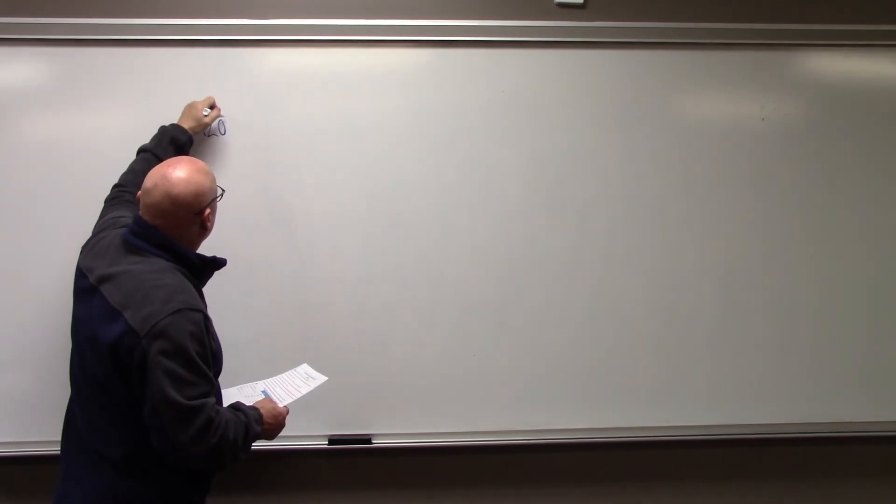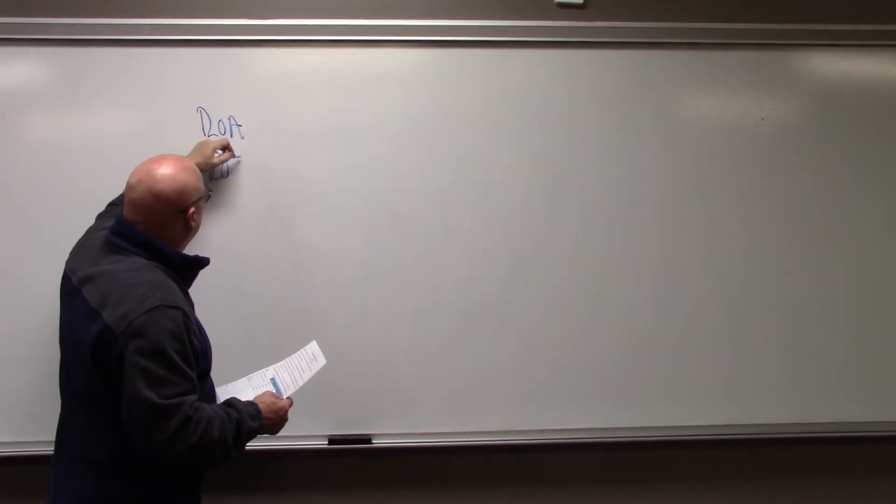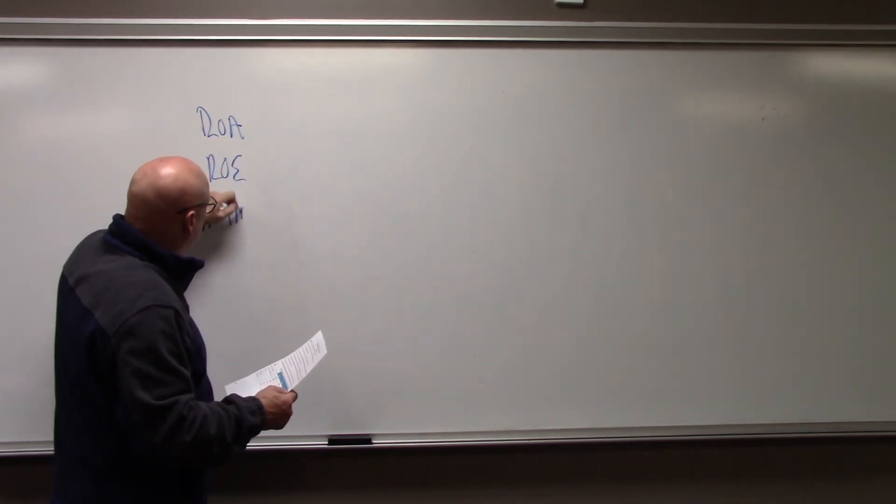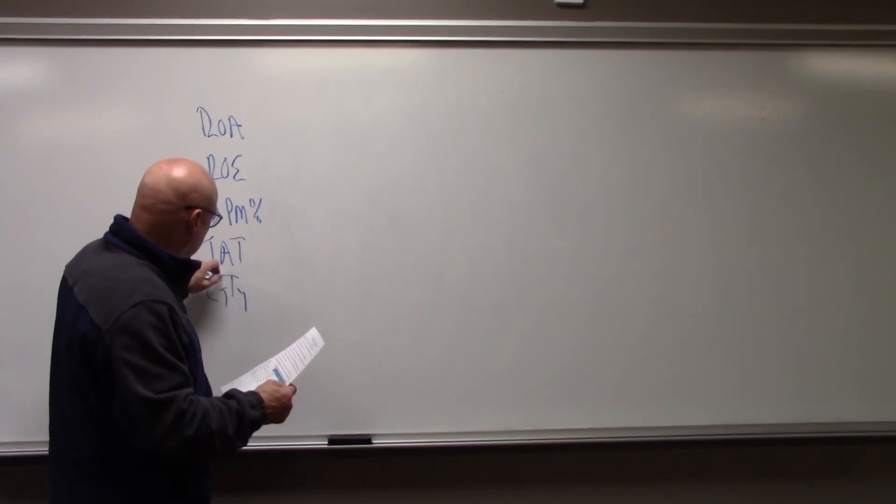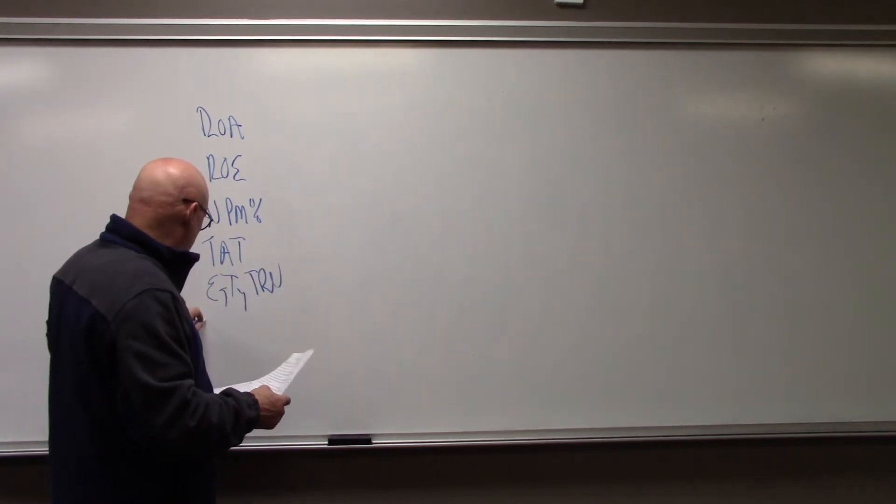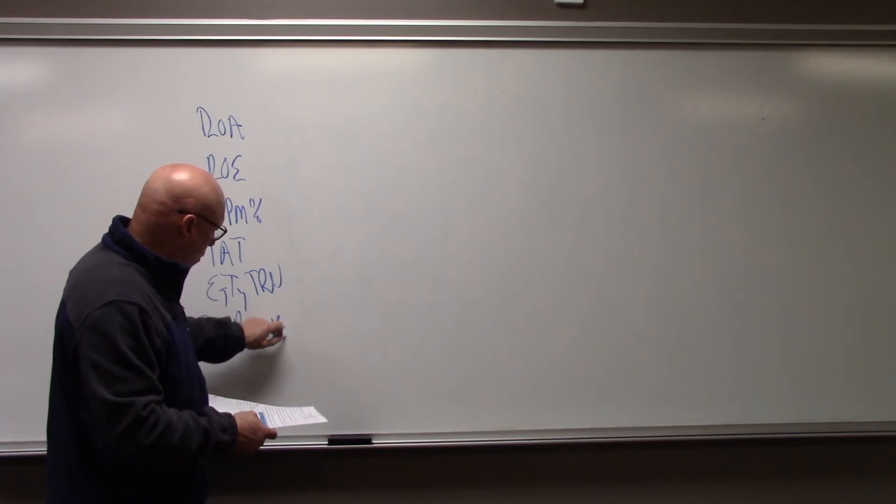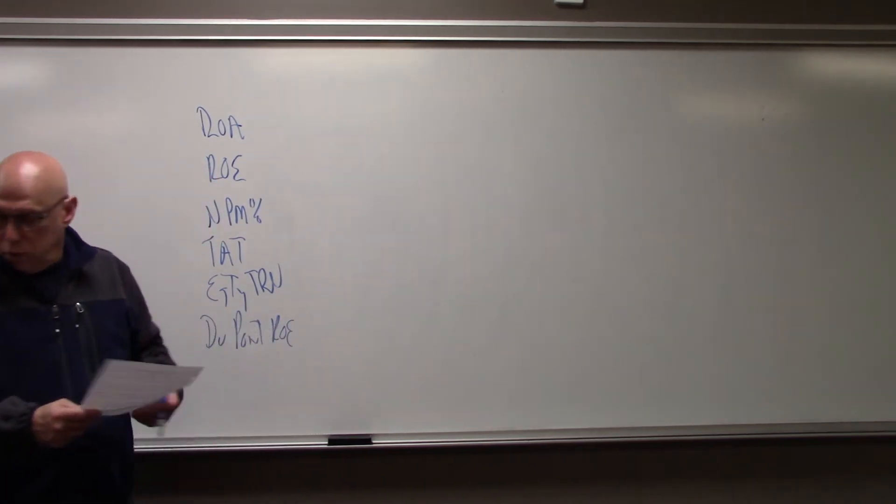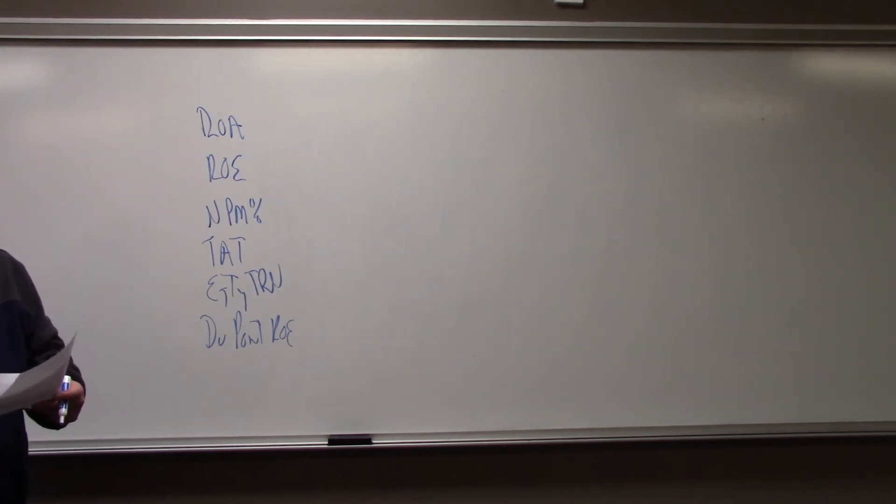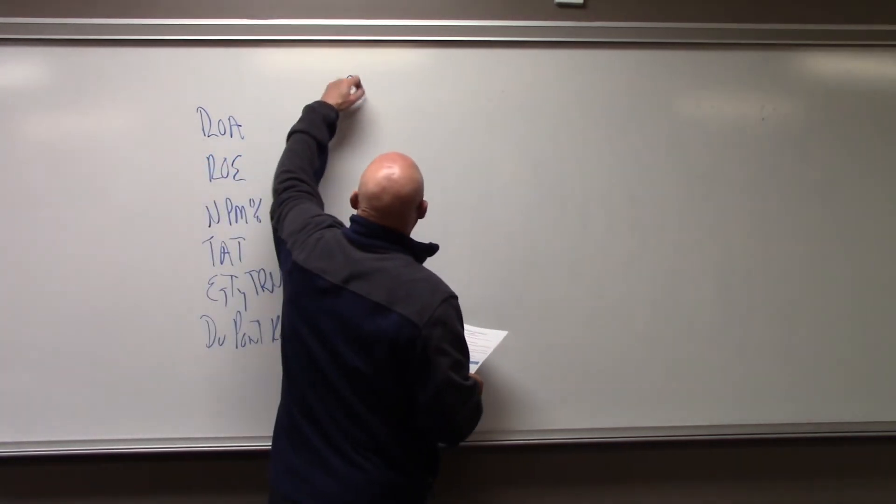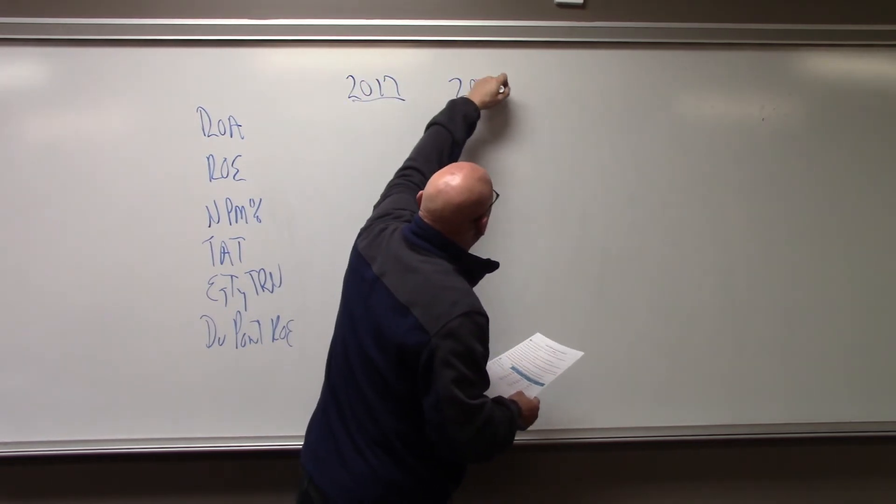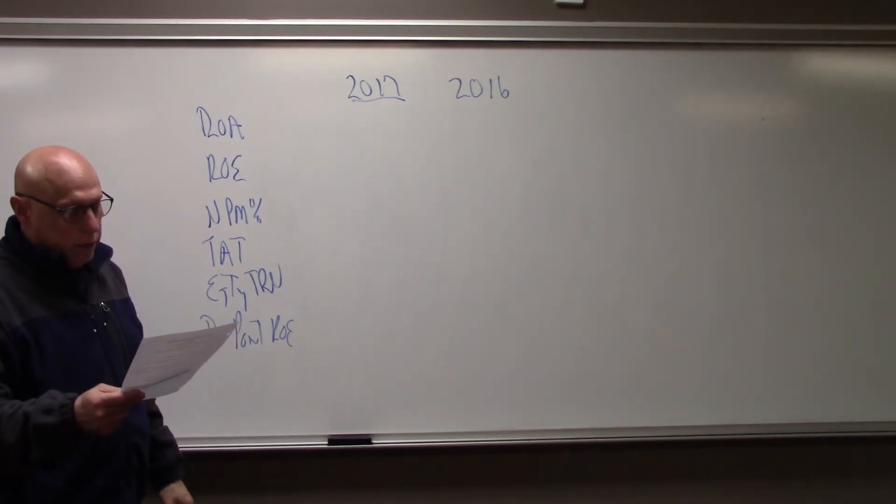Let's do return on assets ROA, ROE, then net profit margin percentage, total asset turnover, equity turnover, and DuPont ROE. To do this, we need a balance sheet and an income statement. I only have the income statement. So I'm going to give you the answers for two years, 2017 and 2016. What you're going to have to do is go and do the calculations yourself. But I'll give you an idea of what they look like.